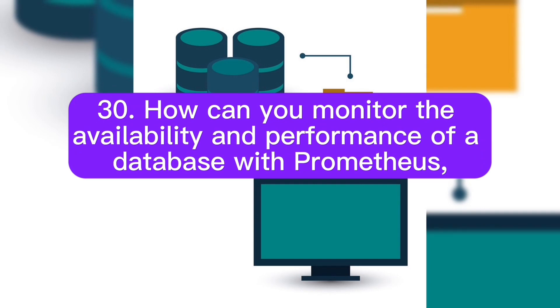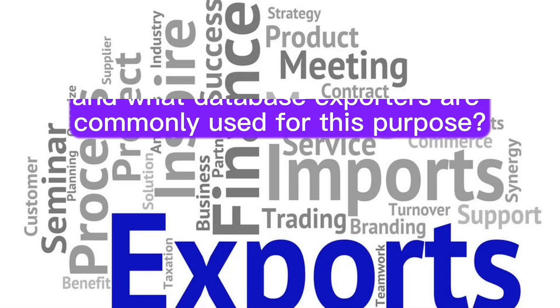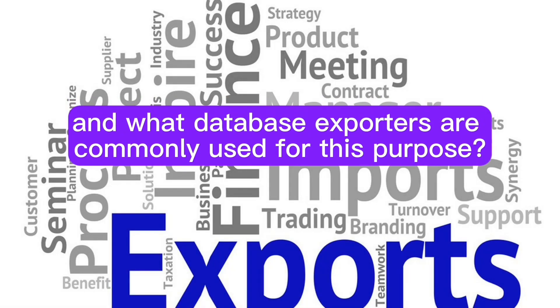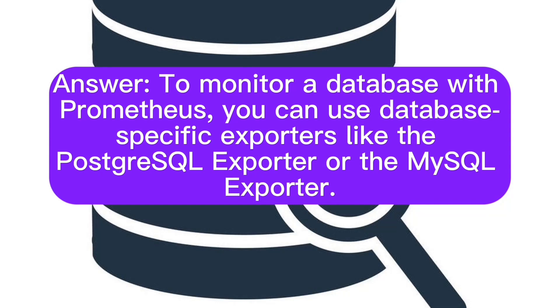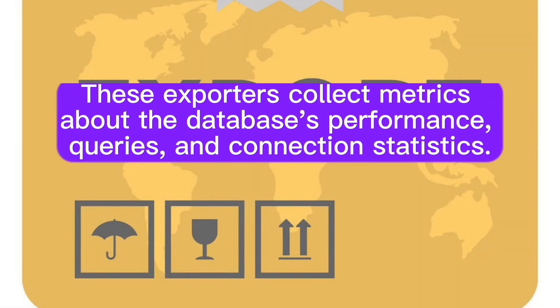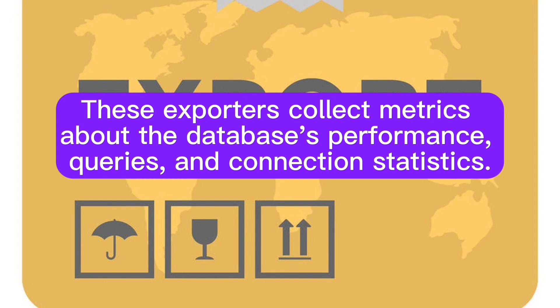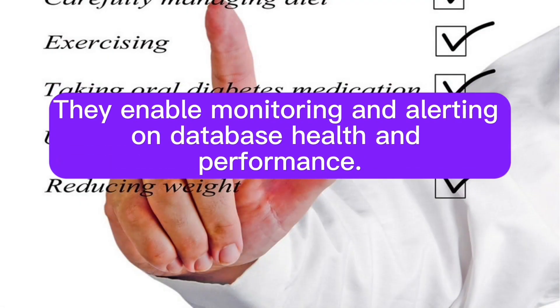How can you monitor the availability and performance of a database with Prometheus, and what database exporters are commonly used for this purpose? To monitor a database with Prometheus, you can use database-specific exporters like the PostgreSQL exporter or the MySQL exporter. These exporters collect metrics about the database's performance, queries, and connection statistics, enabling monitoring and alerting on database health and performance.